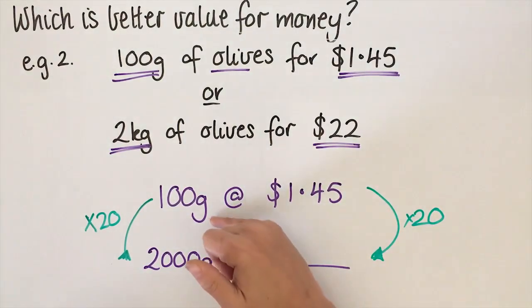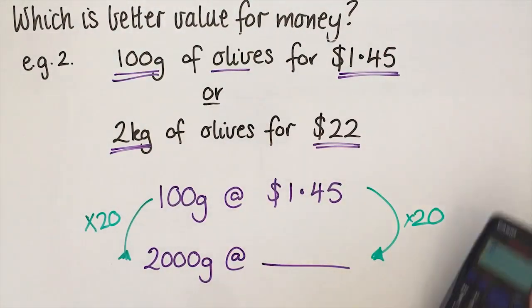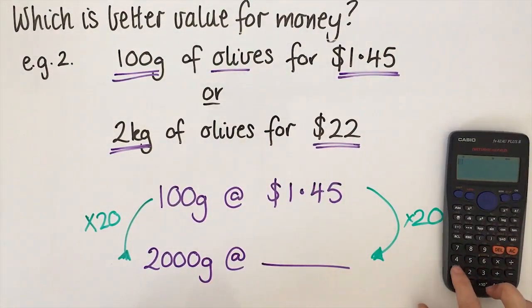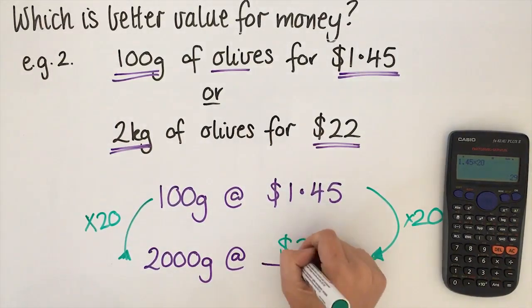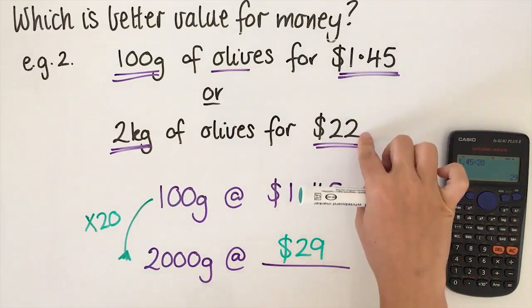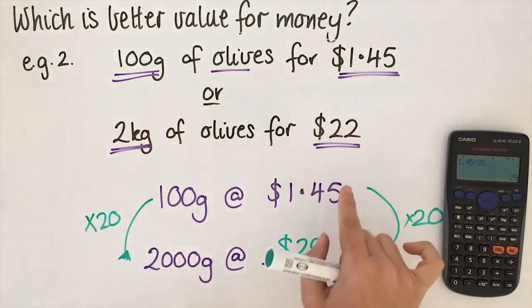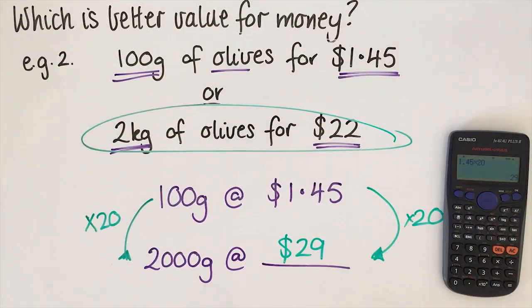If I bought 20 packets of this, how much would that cost is what we're really trying to find out. So I'm going to go $1.45 times 20, and that's going to give me $29. If I bought 20 of those, it would cost $29, but I would end up with the same amount as this. But this is cheaper than $29. So the best buy is to buy two kilograms of olives.